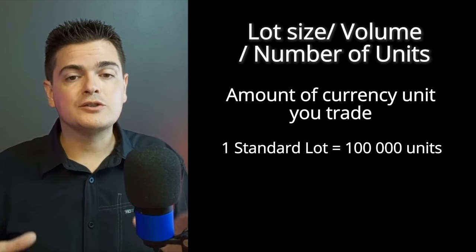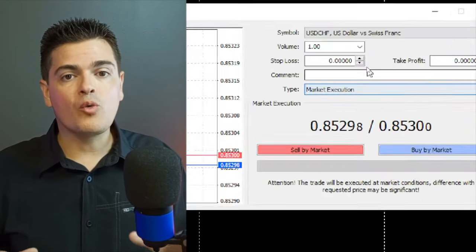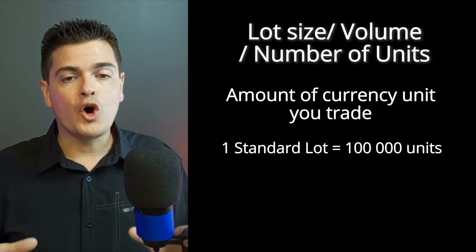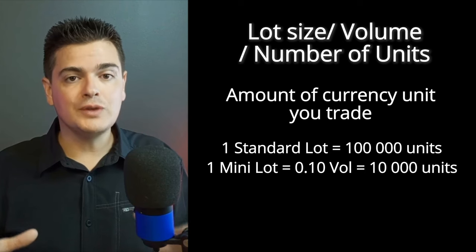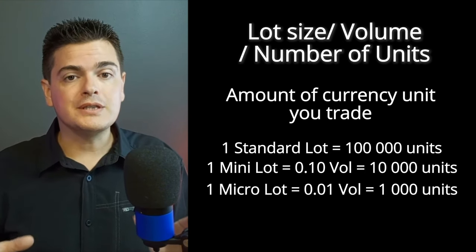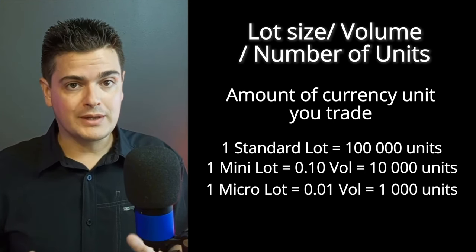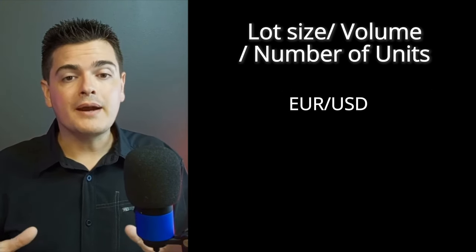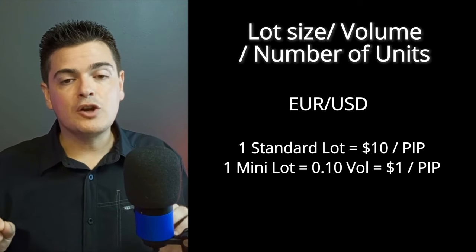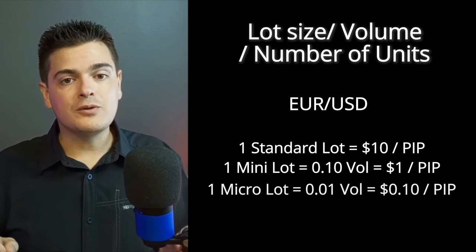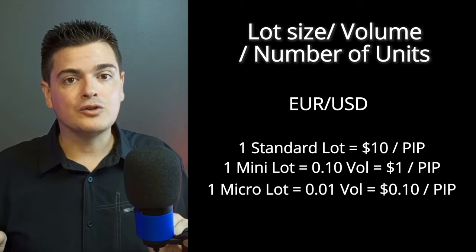A standard lot represents one unit in the volume tab where you will enter your trade volume. A mini lot represents 0.10 volume, which equals 10,000 units of currency. And the micro lot, 0.01 volume, represents 1,000 units of currency. For example, in the EURUSD pair, one standard lot represents $10 per pip, 0.10 lot equals $1 per pip, and 0.01 lot equals $0.10 per pip.